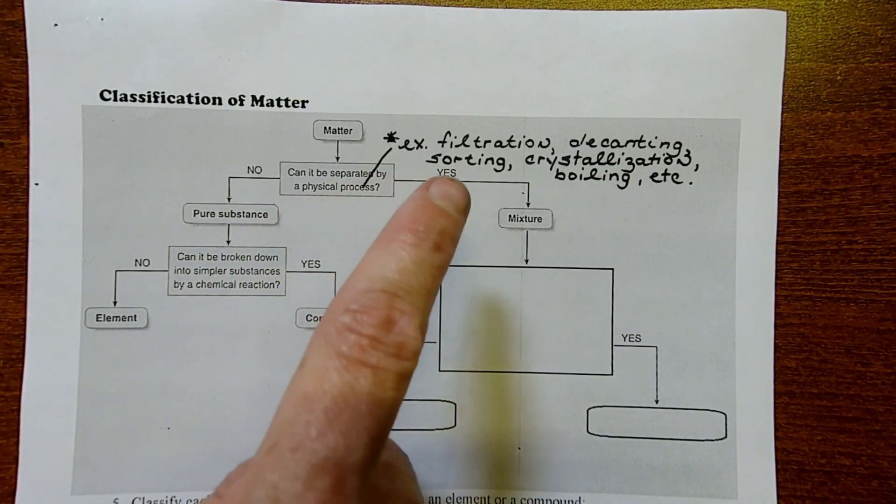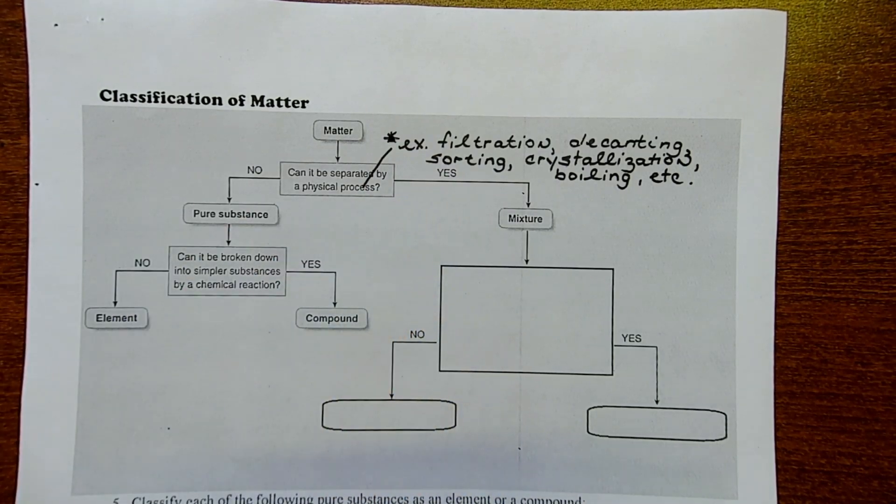Some examples would include filtration, decanting. What is decanting? If you go to the beach and you fill up a bucket with sand and water, the sand is going to sink to the bottom and you could decant or pour off the water on top. Sorting. You have a bunch of beads and they're all different colors and you sort them by color into different piles. At the end of the day, it's still a bunch of beads. You haven't really changed the chemical makeup of anything.